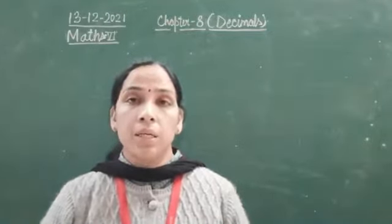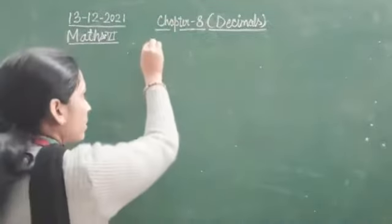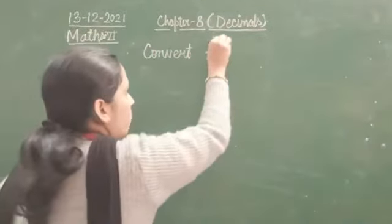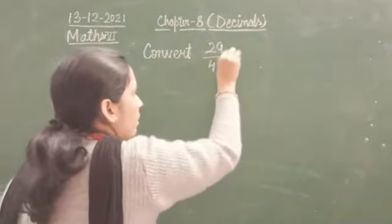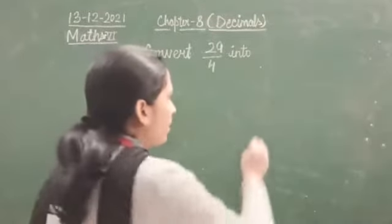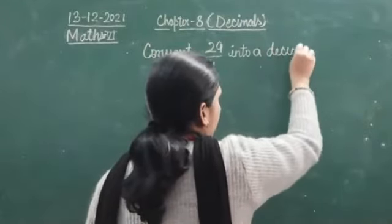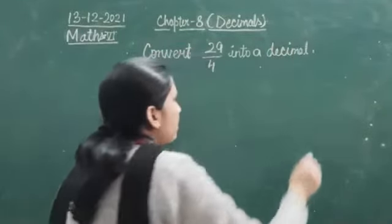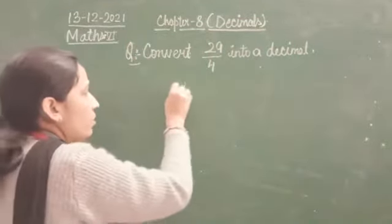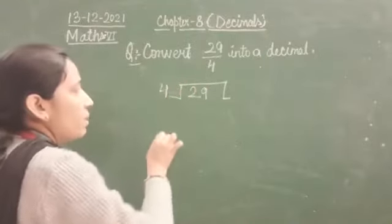Convert — if you have been given with a fraction, like convert a fraction. With a question only, we will be able to understand. Convert 29 by 4 into a decimal number. Now, here what we need to do is we are going to divide this 29 by 4. 29 will be divided by 4.